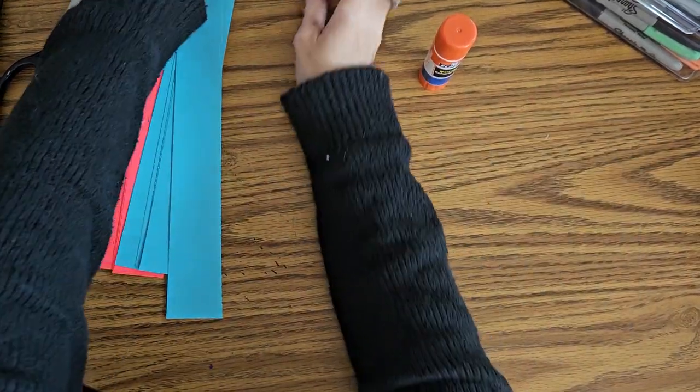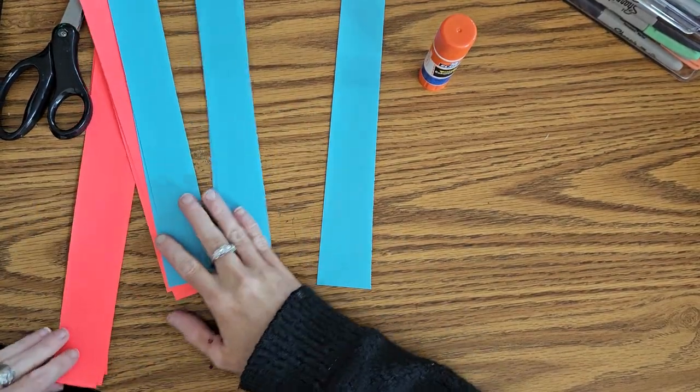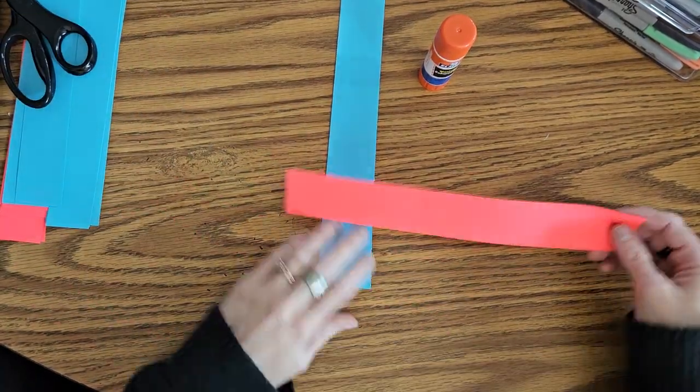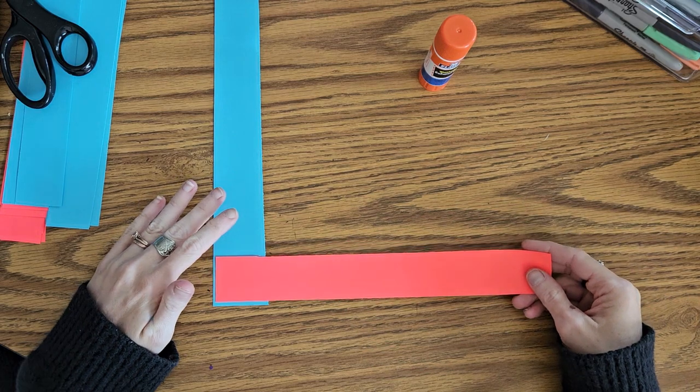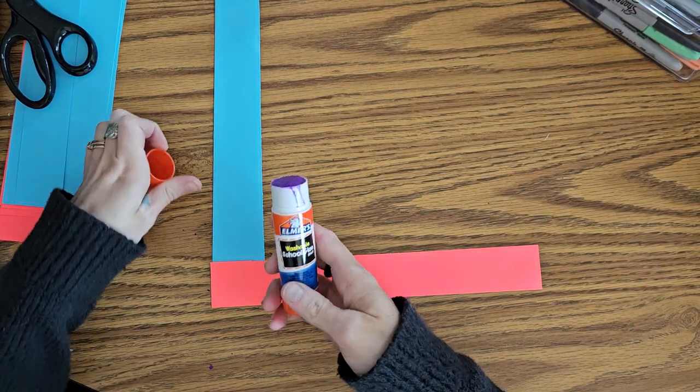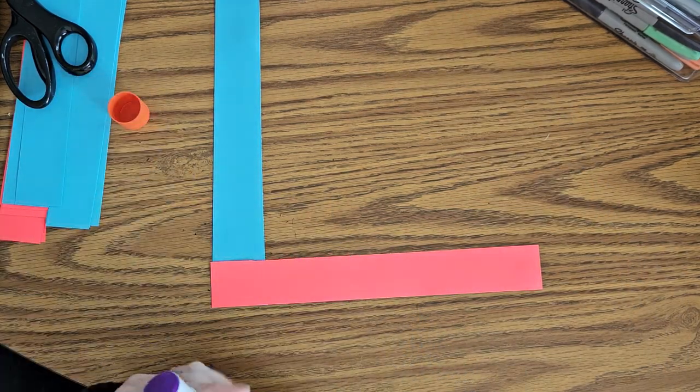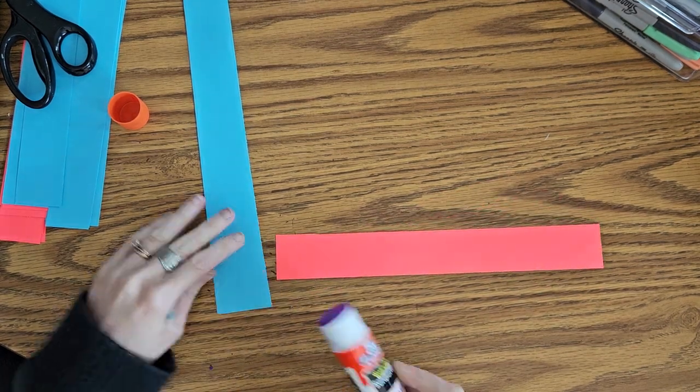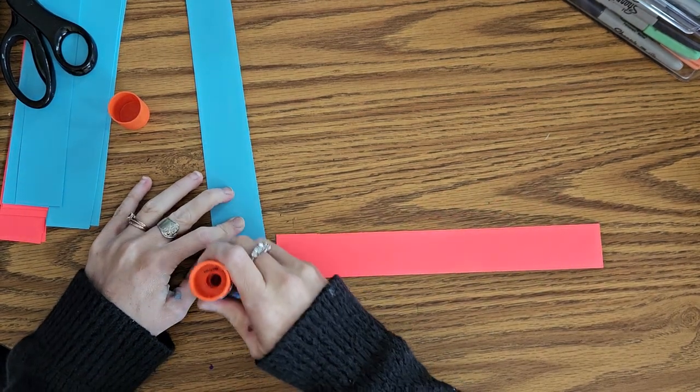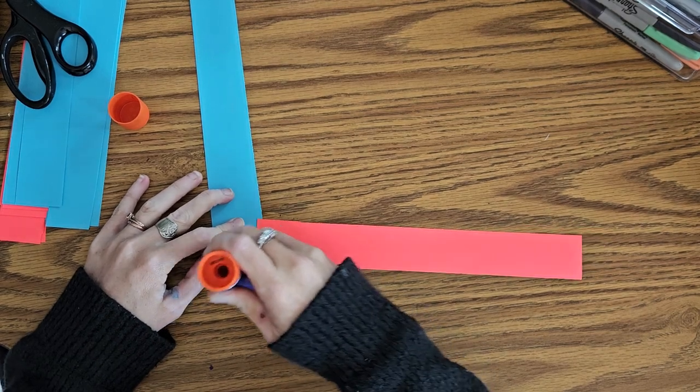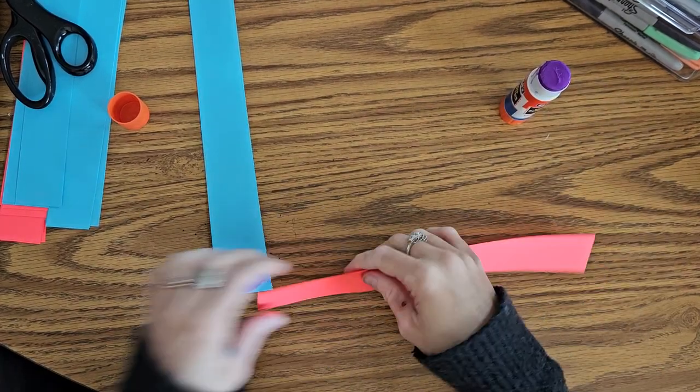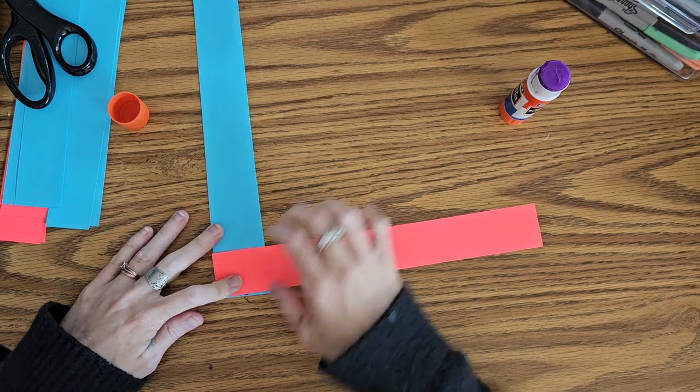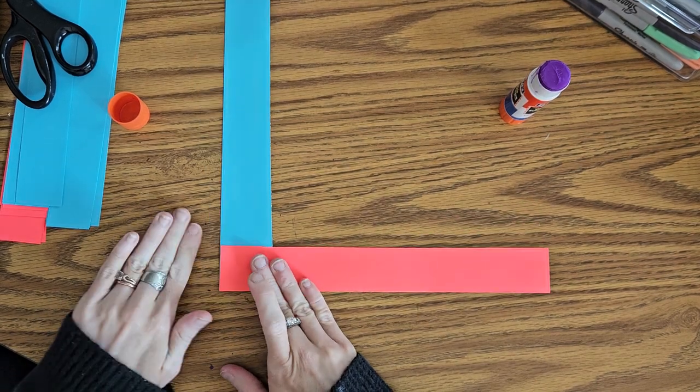But let's get into how to make it. So you're going to take two pieces of opposite colors and make like an L shape. And you're going to glue it here to start to hold them together. So right here where they overlap, you're going to put some glue. Make sure you're using a glue stick. Liquid glue would get all over the place. Make sure they're stuck.